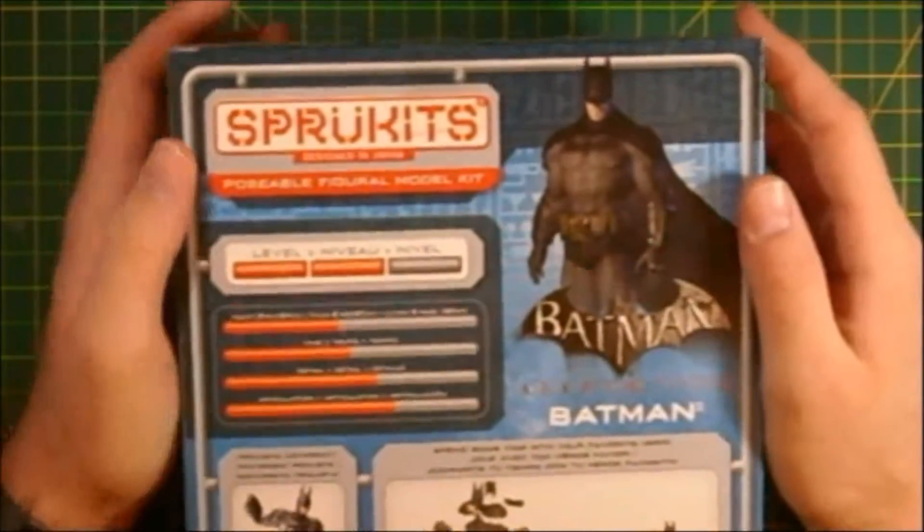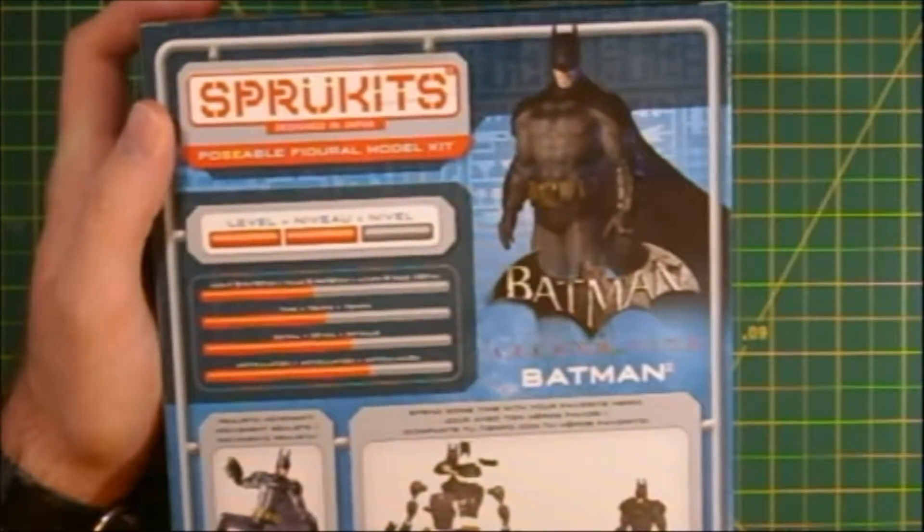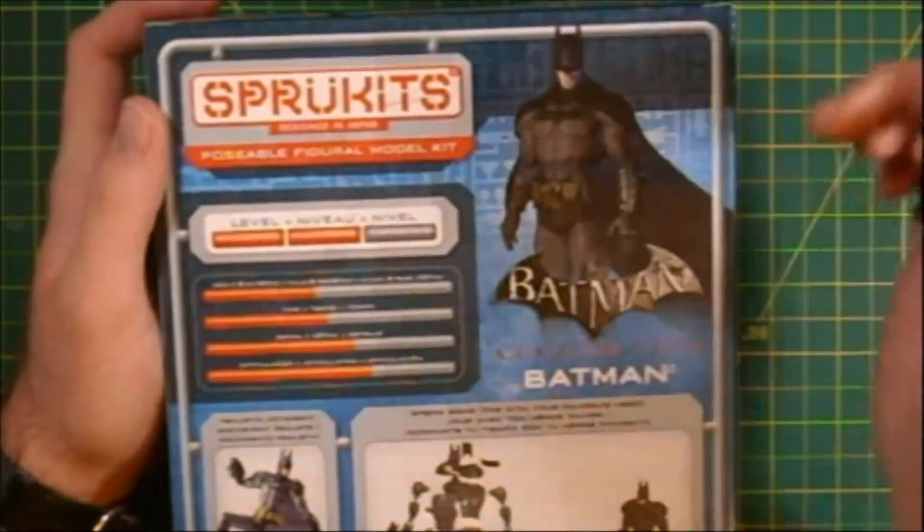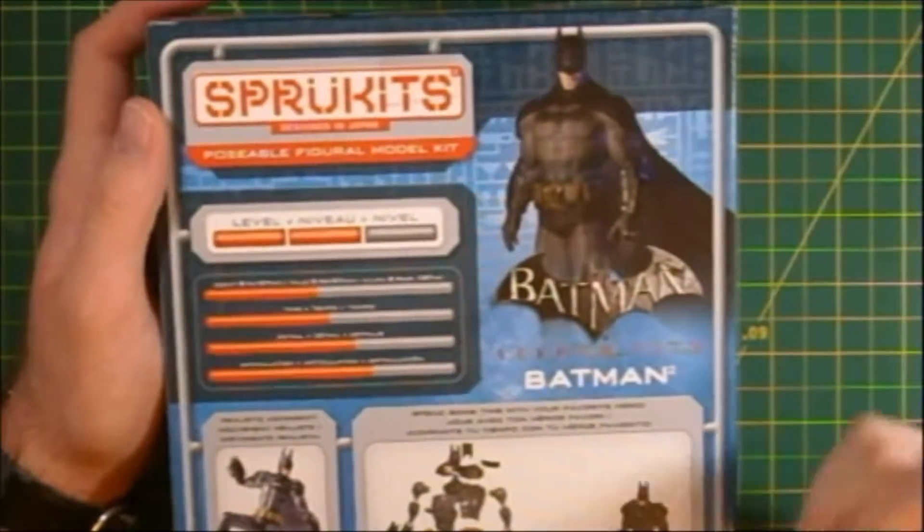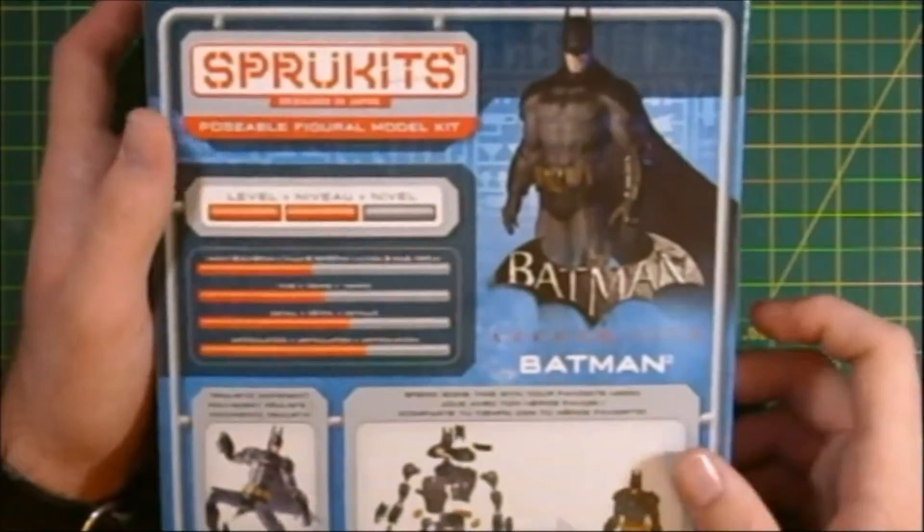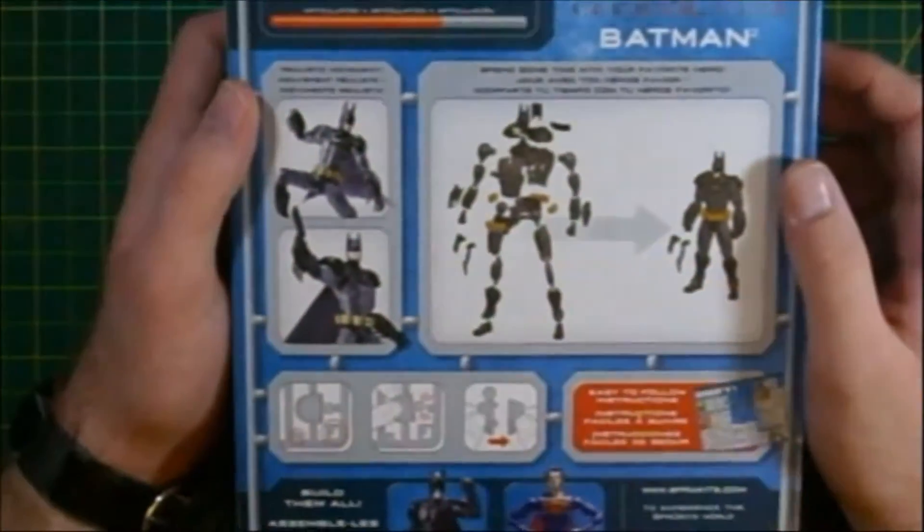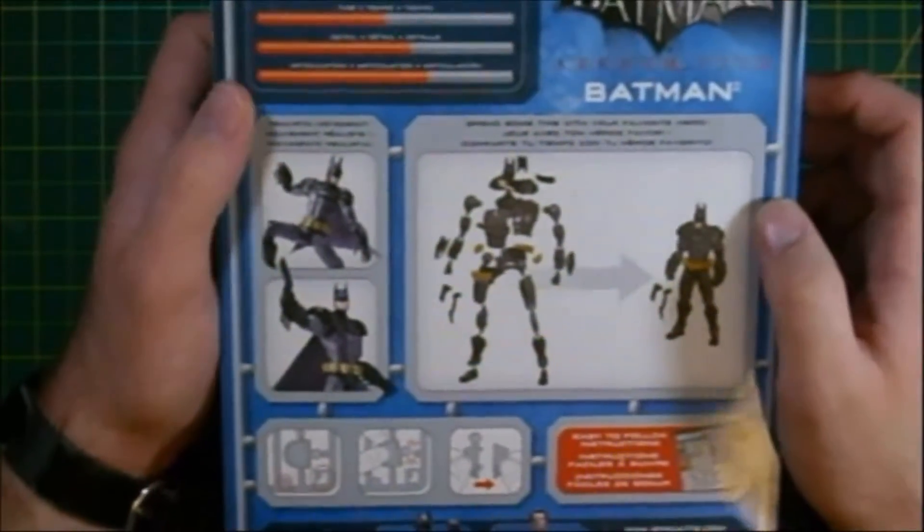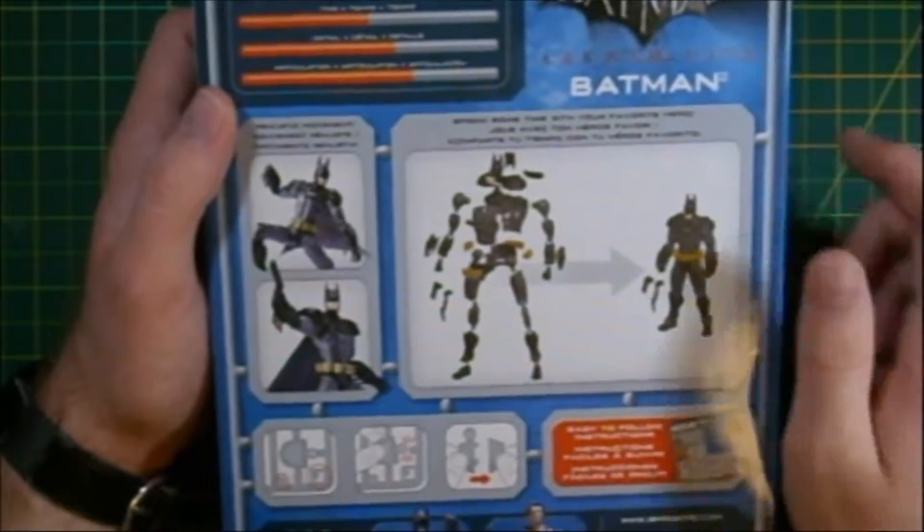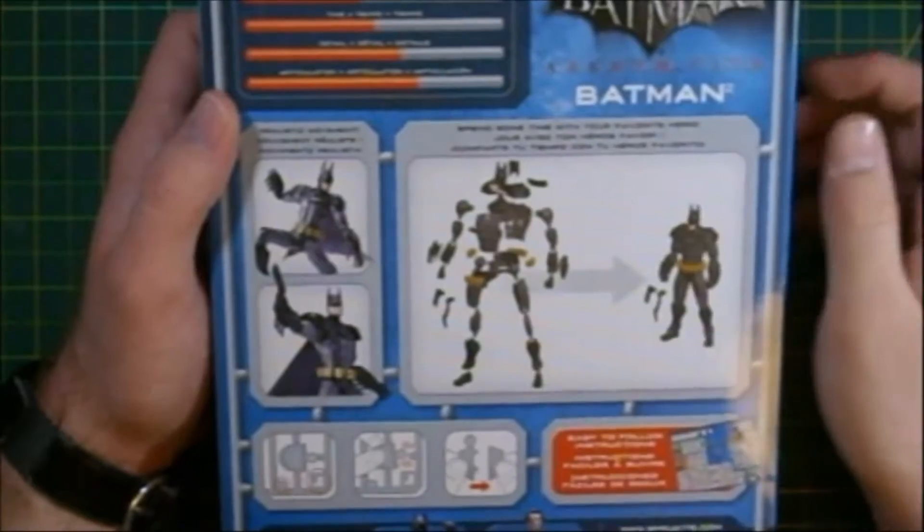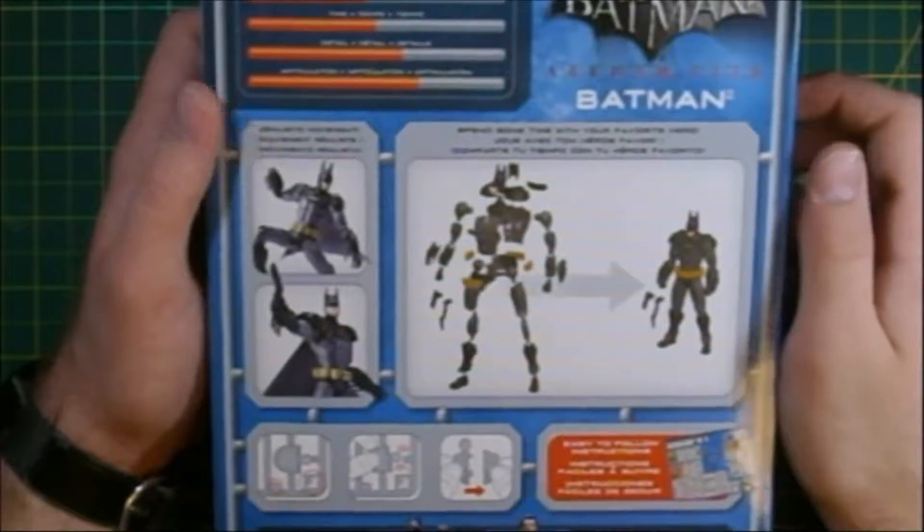On the back of the box, we've got a lot more of all that other stuff that we saw on the other sides. We've got this picture of the CG model from the game for comparison. A little bit further down, about halfway down, we've got a couple more shots of the completed model, again, with no paint or any extra added detail whatsoever.